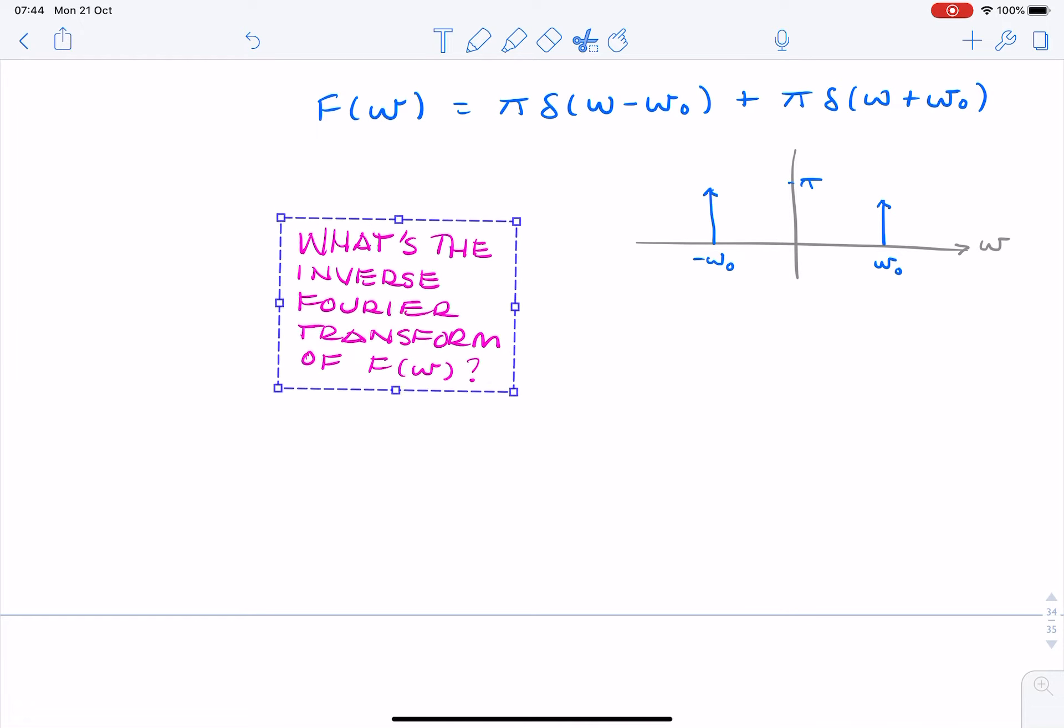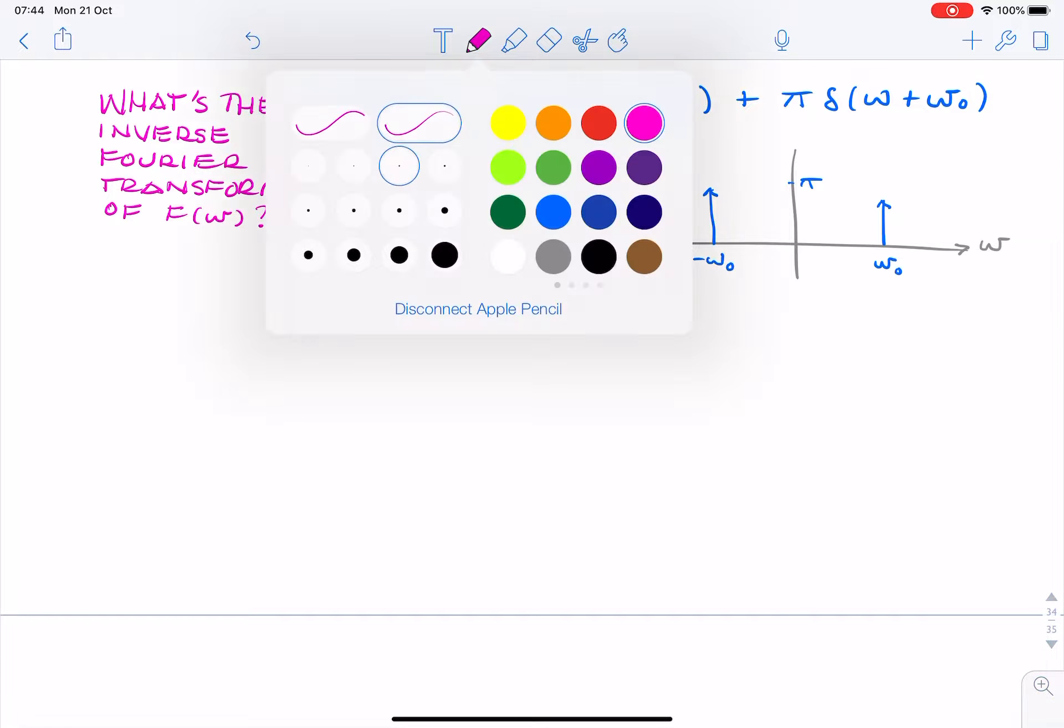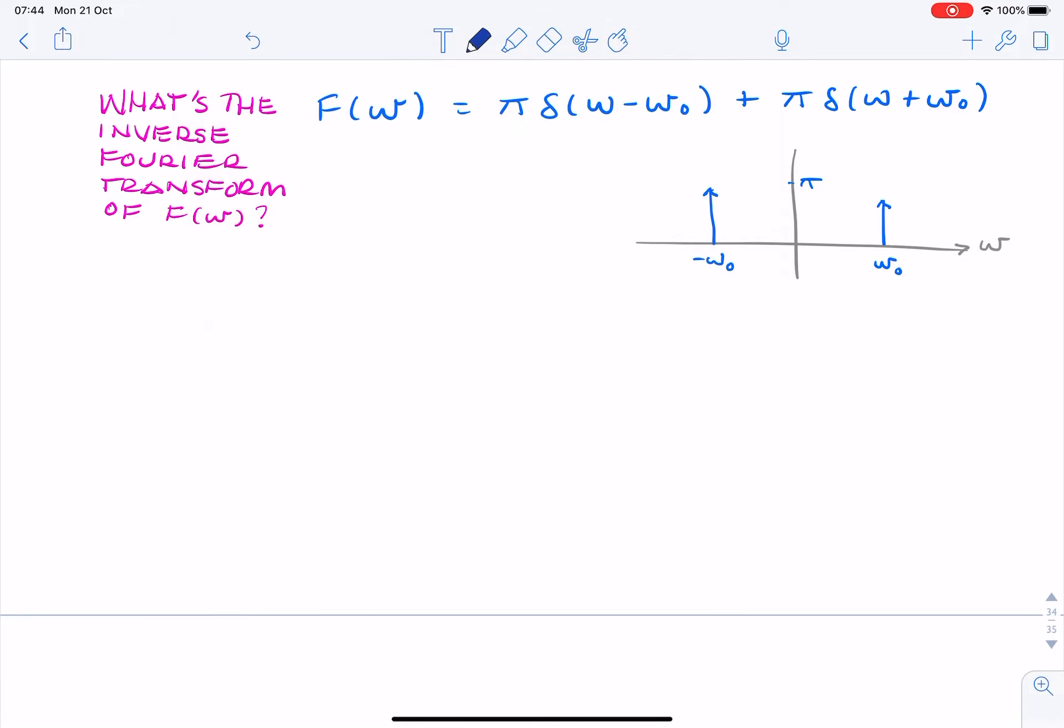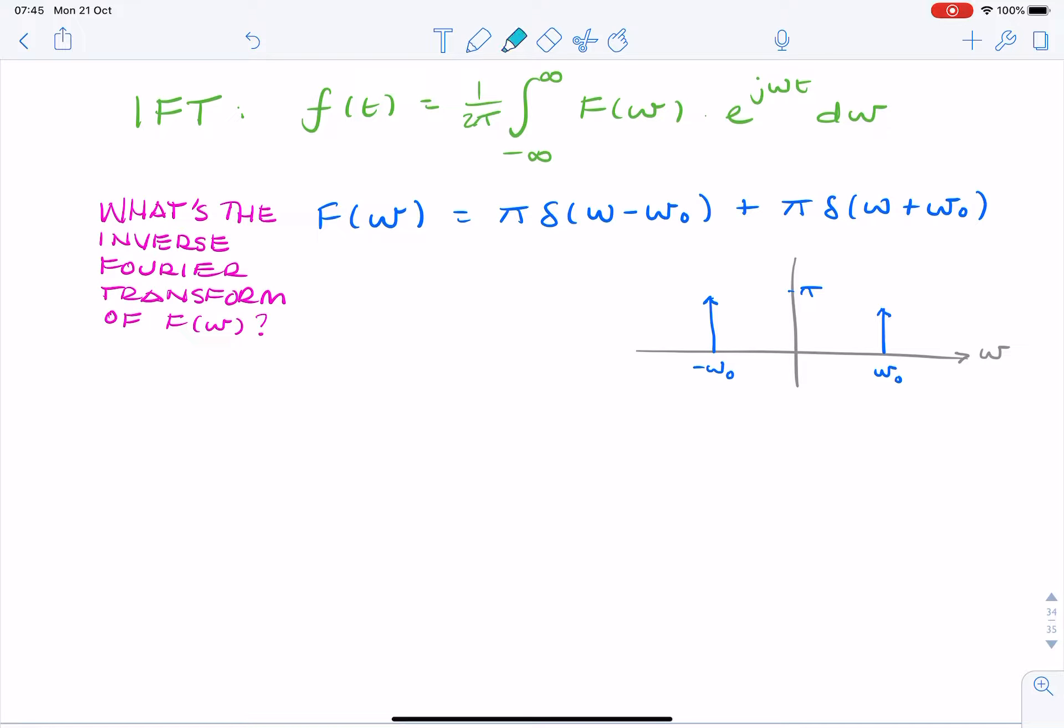I'm going to use the pair of impulses as an example to carry out the inverse Fourier transform. To find the inverse Fourier transform, we use the inverse Fourier transform integral, where we simply take our signal, f of omega, which is given in the question, multiply it by this complex exponential, and integrate it over all frequency.